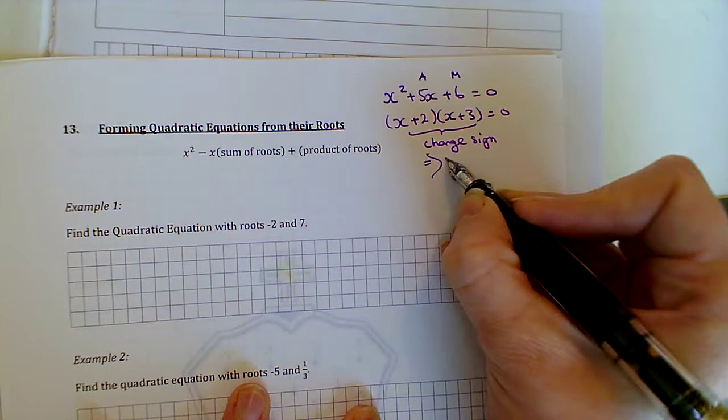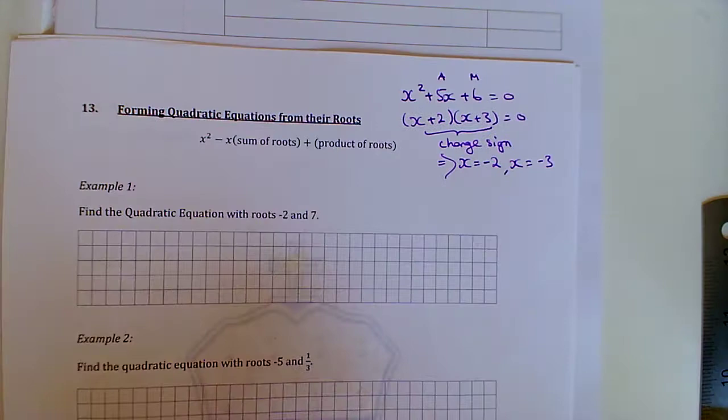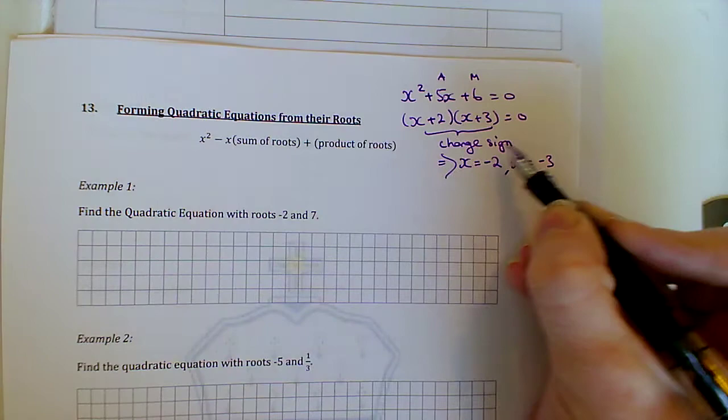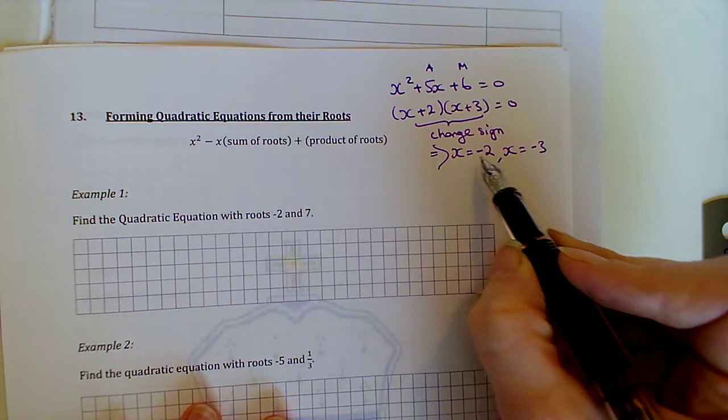So we get x = -2 and x = -3. So then working backwards from that, of course we can put the roots into factors, multiply out the factors, but we can actually do a bit of a shortcut.